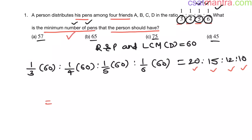So the minimum number of pens would be 20 plus 15 plus 12 plus 10. What is the last digit? 0 plus 5 is 5, 5 plus 2 is 7, 7 plus 0 is 7. Last digit is 7. So our answer is going to be 57, option A.